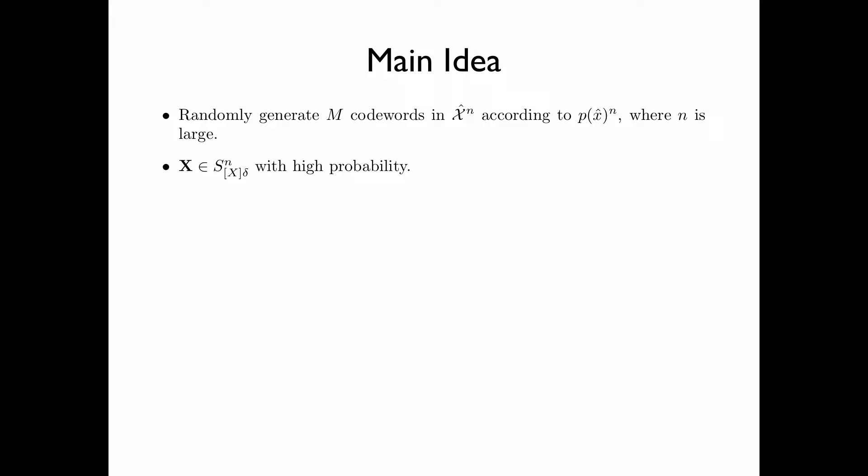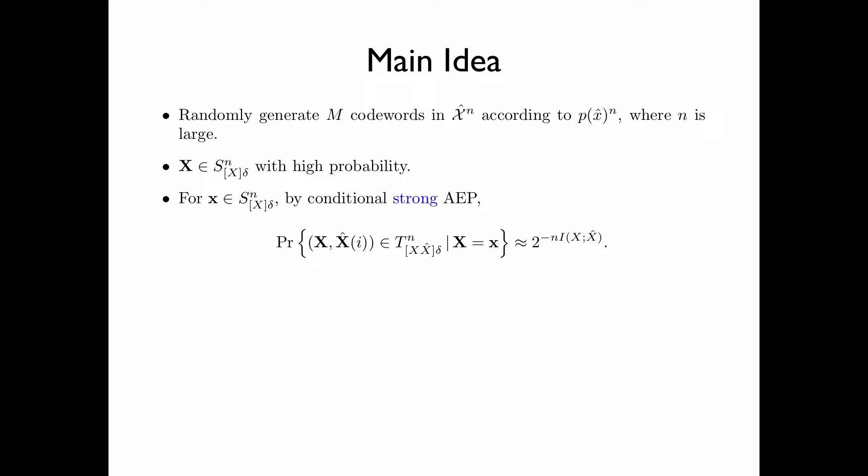By the strong AEP, the source sequence x is in the typical set with high probability. For a particular source sequence x in the typical set, by the conditional strong AEP, the probability that it is jointly typical with a particular codeword is approximately equal to 2 to the power of minus n times I(x̂).